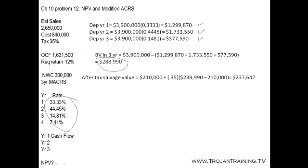The asset is sold at a loss to book value. It's sold for $210,000, but its book value was higher than this, so we have a loss. The loss is tax deductible in this case. Using the formula, we take the $210,000 sale price and calculate the tax amount on the difference. The after-tax salvage value is $237,647.